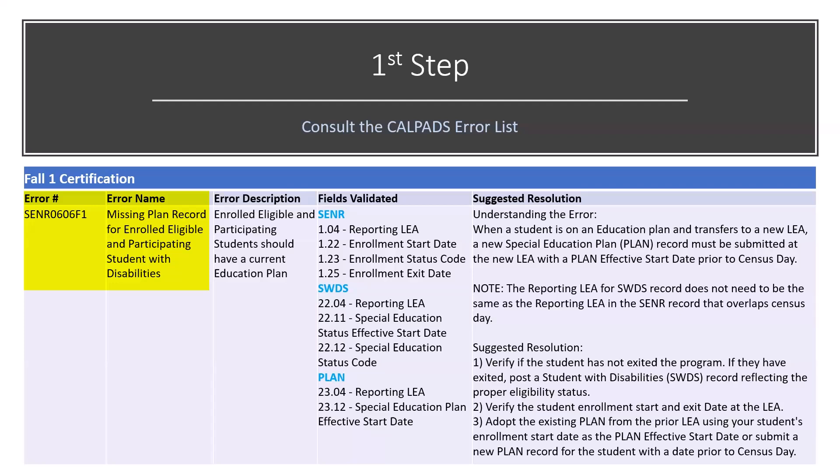Please do not try to troubleshoot your error just using the error name. We have the SENR 0606F1, and the name is 'Missing Plan Record for Enrolled, Eligible, and Participating Students with Disabilities.' When you're new, a lot of times you try to use the error name to troubleshoot rather than consulting the CalPADS error list. That's a grave mistake.